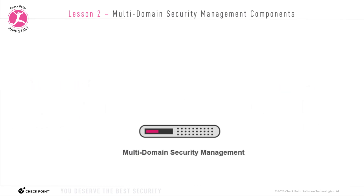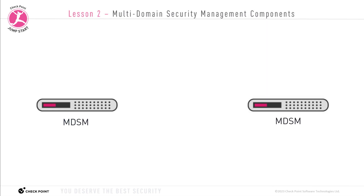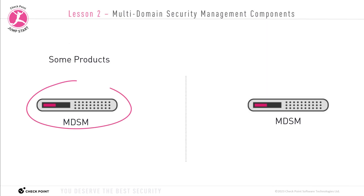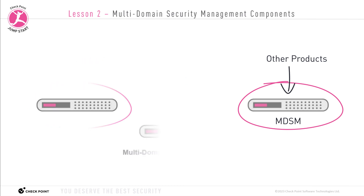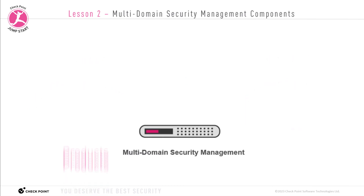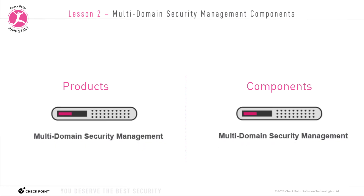In some cases, you might want to install all the products and components on one system. In other cases, you might need to install some products and components on one system and then install the other products and components on different systems, on different appliances. So what are these products and components? In this lesson, we're going to break down the multi-domain security management server into its products and components and discuss their various functions.